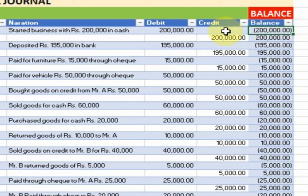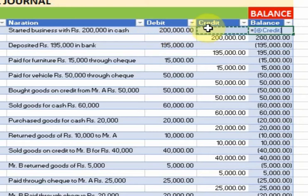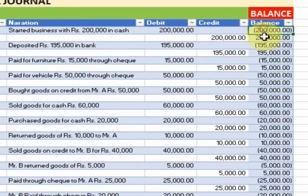I use the formula credit minus debit. I just delete it and type: equals, then select credit minus debit, and press Enter. It will display the balance.